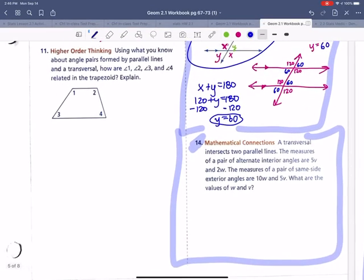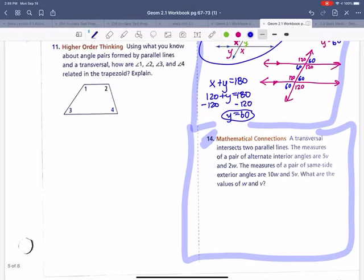Now, question number 14. A transversal intersects two parallel lines. So let's draw the two parallel lines. This symbol means they're parallel. And a transversal. So here's my transversal.